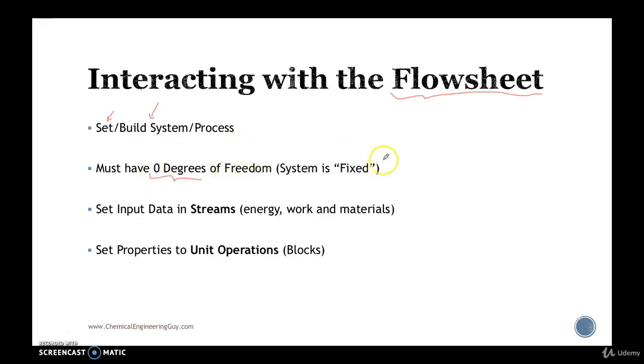Typically we must state zero degrees of freedom, which implies there are no more variables needed to set up. For instance, a very easy example is this heat exchanger with water. We state the flow rate, temperature going in, and the pressure. Let's say we don't give the heat duty and we keep the final temperature.